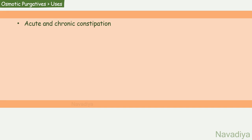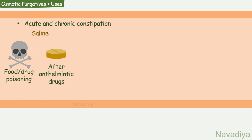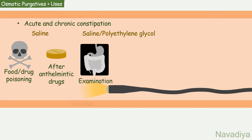Now let's see the uses of osmotic purgatives. They are used in acute and chronic constipation. Saline is used to clear the bowel after food or drug poisoning and after some anti-helminthic drugs like niclosamide to flush out worms. Saline and polyethylene glycol are used to prepare the bowel for radiologic or endoscopic examination and for surgery.